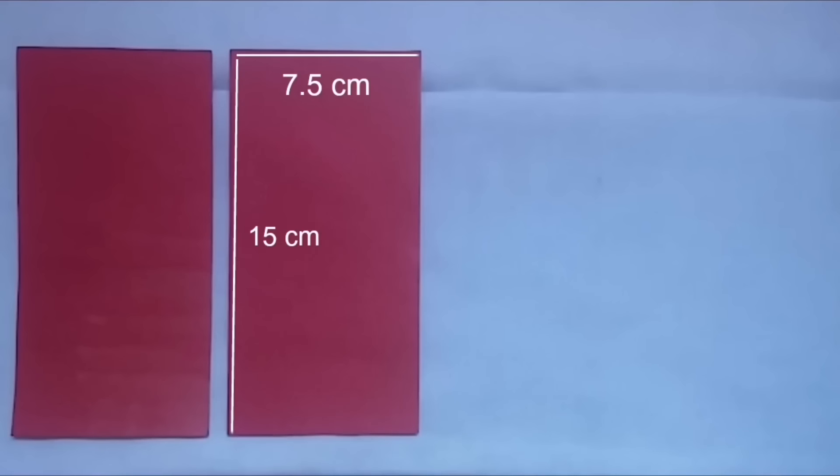Start by measuring and cutting out four 15 by 7 and a half centimeters rectangles of paper. If you are using two colors of paper, cut two from each color to make four. Put three rectangles aside and leave one to work on. Place the rectangle in a standing vertical position, and with your ruler, mark and score a horizontal line 3.75 centimeters away from the top edge and 3.75 centimeters away from the bottom edge.